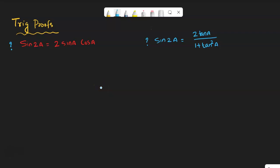Hi hello everyone, this is Mr. M from Algebra Lessons one more time. Today I am here with two trig proofs: sin 2a is equal to 2 sin a cos a, and sin 2a in terms of tan a, that is 2 tan a by 1 plus tan square a.